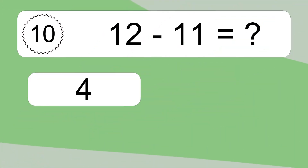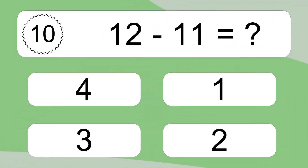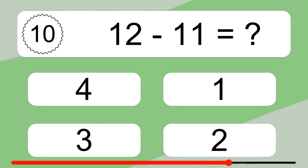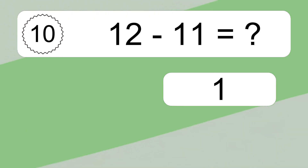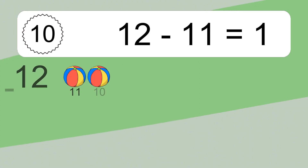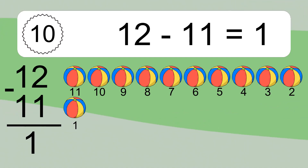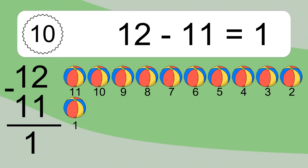12 minus 11 equals what? 12 minus 11 equals 1. Let's count it. 11, 10, 9, 8, 7, 6, 5, 4, 3, 2, 1.